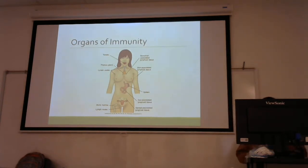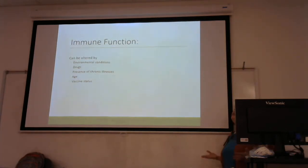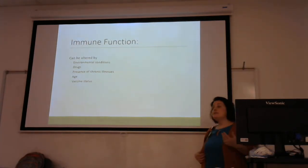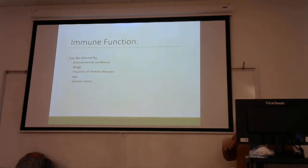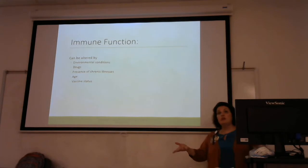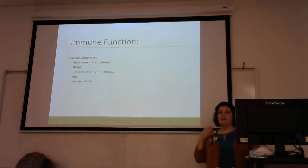Immunity is throughout your body, and we have things that can alter it. Environmental conditions — really meaning exposure — such as radiation or, here in the South, pesticides, are things that can damage cells at the cellular level and impact that person's immune function.